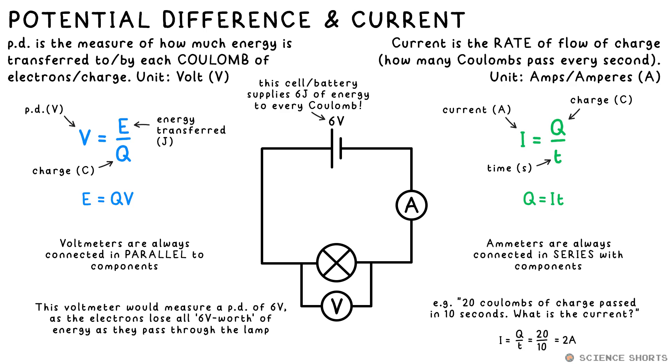We measure current with an ammeter. Note that's not an amp meter. Unlike a voltmeter, an ammeter must go in series, which means in line with the component we want to measure the current flowing through.